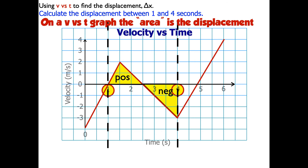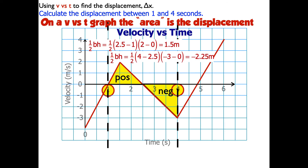Now I'll do the calculations. I've got two triangles, so it's going to be ½ base times height for each of these. For the positive one, you can see my calculations, and I get 1½ meters. For the negative one, you can see my calculations, I get negative 2.25 meters. I get negative because the height is negative — so it's a negative, quote-unquote, area. Remember, area is a process, not an actual surface we're looking at. Then I'll add these two together: 1.5 meters plus negative 2.25 meters gives me negative 0.75 meters.